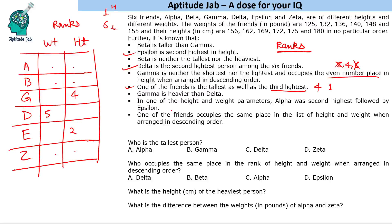In one of the height and weight parameters, Alpha was second highest followed by Epsilon — so Alpha is rank 2 and Epsilon is rank 3. This cannot be in terms of height because height rank 2 is already filled by Epsilon. So this must be in terms of weight: Alpha is rank 2 and Epsilon is rank 3 in weight.